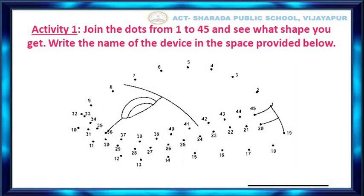Let us start Activity No. 1. Join the dots from 1 to 45 and see what shape you get. Write the name of the device in the space provided below.